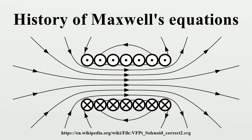When Maxwell derives the electromagnetic wave equation in his 1865 paper, he uses equation D to cater for electromagnetic induction rather than Faraday's law of induction, which is used in modern textbooks. However, Maxwell drops the μv × H term from equation D when deriving the electromagnetic wave equation, as he considers the situation only from the rest frame. In A Treatise on Electricity and Magnetism, an 1873 treatise by James Clerk Maxwell, eleven general equations of the electromagnetic field are listed, including the eight from the 1865 paper.